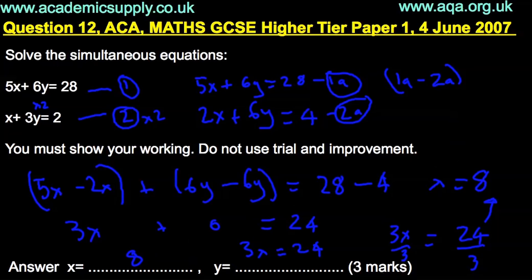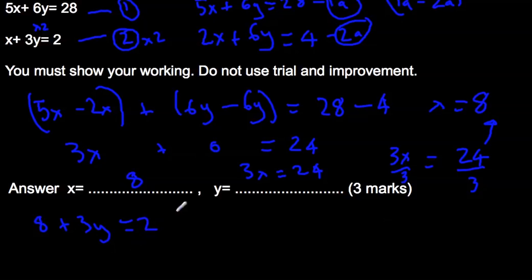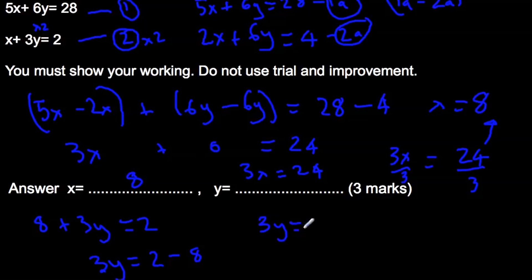We've got x equals 8, but we still have to solve for y. We can substitute back into equation 2: x plus 3y equals 2. Since x equals 8, we get 8 plus 3y equals 2. Bring the 8 across to the other side — it turns into a minus — giving us 3y equals 2 minus 8, which is negative 6. Wait, so 3y equals... 6 divided by 3.